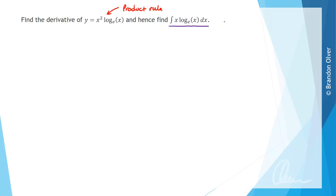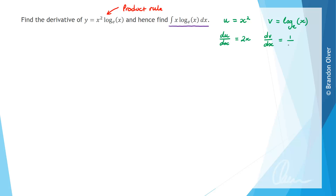To help apply the product rule, out to the side I'm going to let u equal the first function being multiplied, which is x squared, and v is going to equal the second function, which is log e of x. We then calculate du/dx, which equals 2x, and dv/dx, which equals 1 over x. You could use your formula sheet to help find those derivatives.